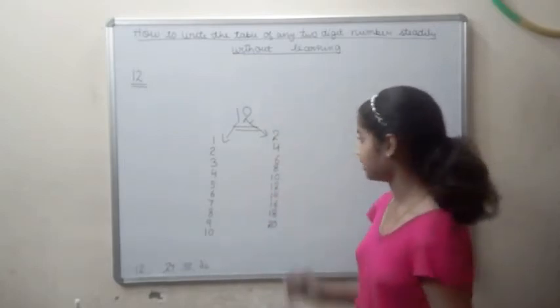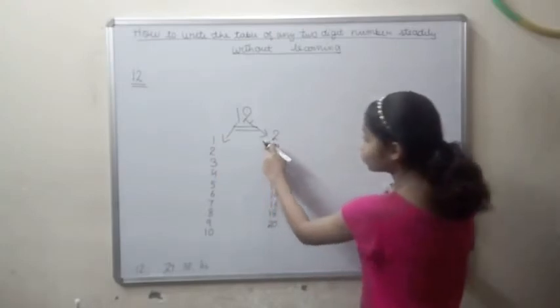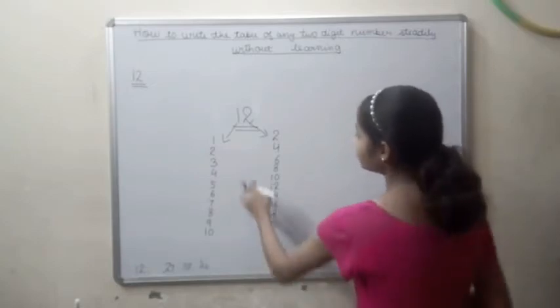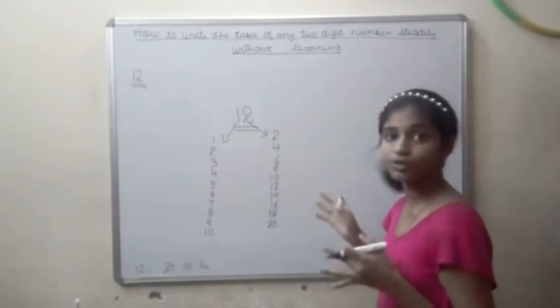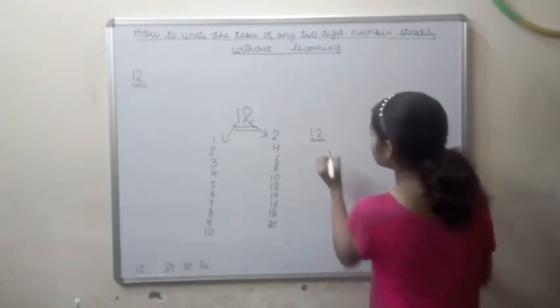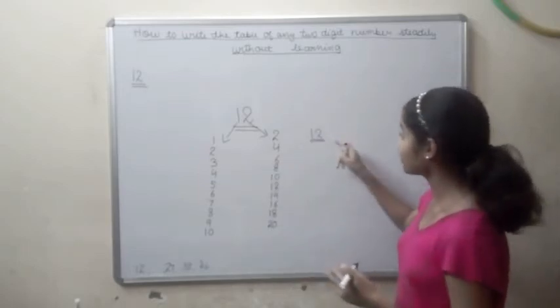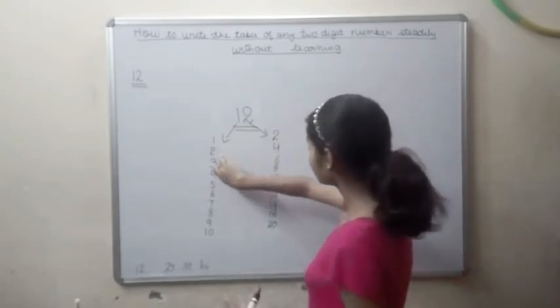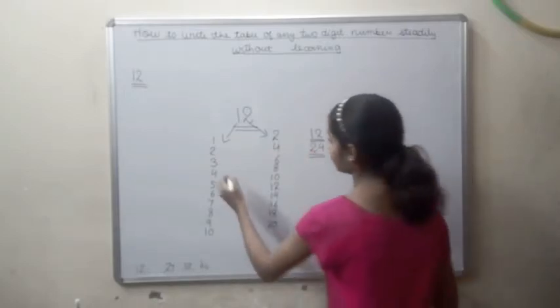Now we will see how to take out the table of 12 by using these two tables. Our first number is that 1 into 1 equals 1 and 2 into 1 equals 2. So now we will use these two numbers to take out 12 into 1. We will combine these two numbers and form a new number. We will write these two numbers together, 1 and 2, and this forms a new number that is 12. So we have got the answer 12 into 1 equals 12.